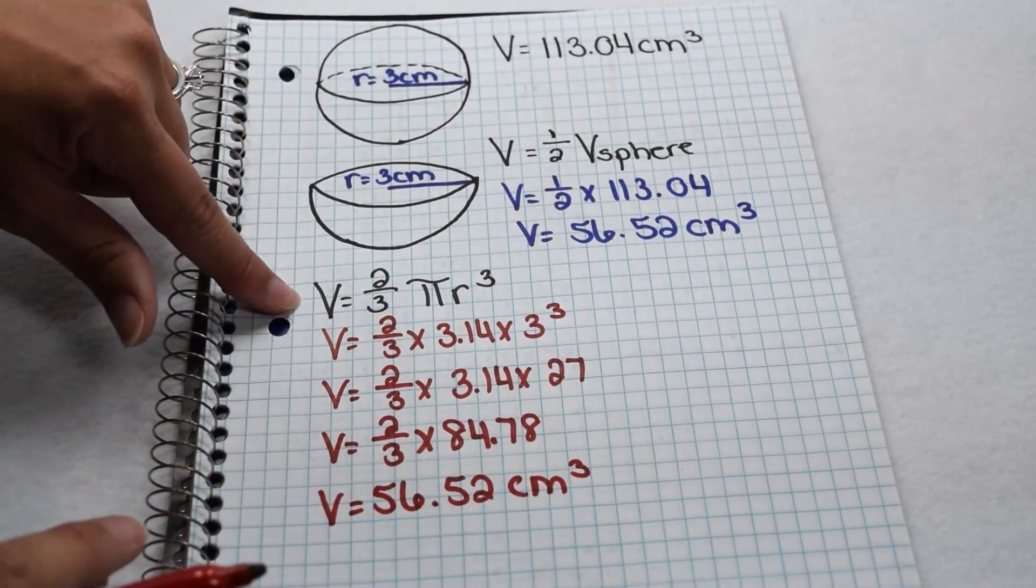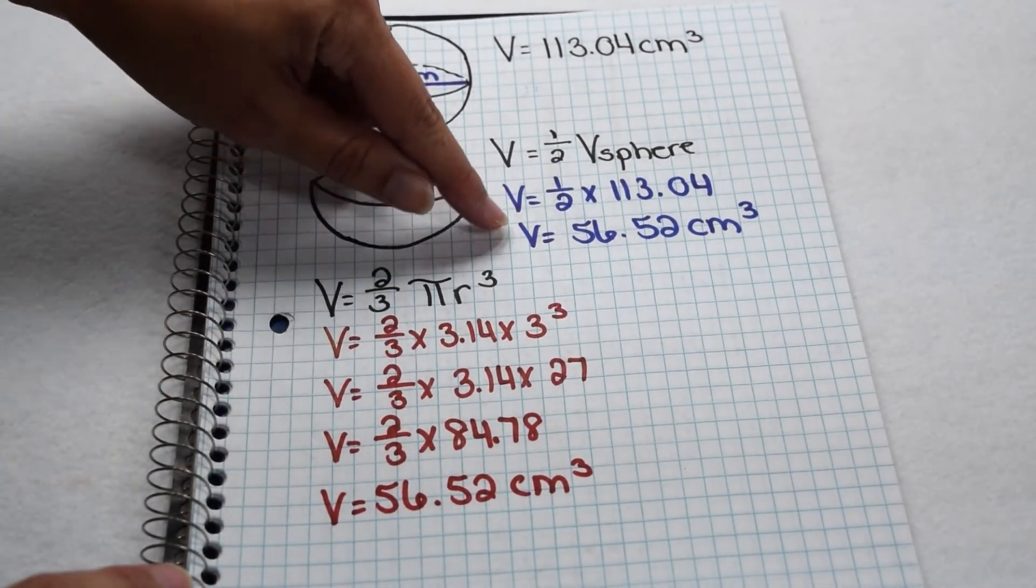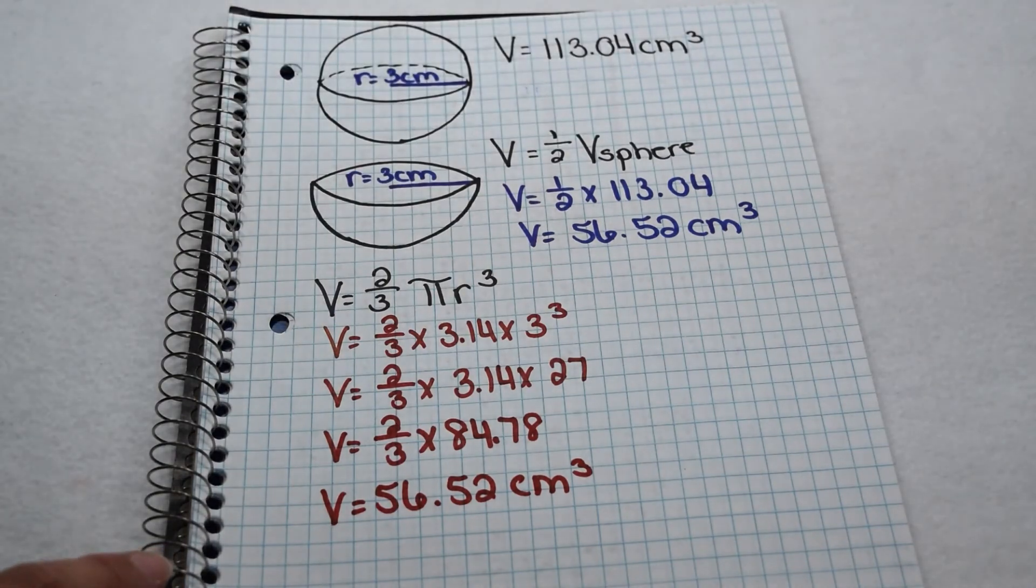So we can see that our equation does give us the same volume as simply finding the volume of half a sphere with the same dimensions.